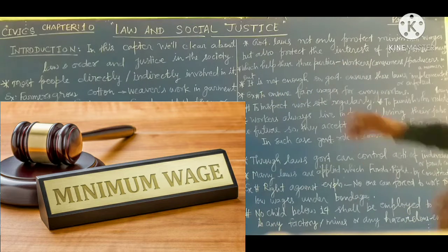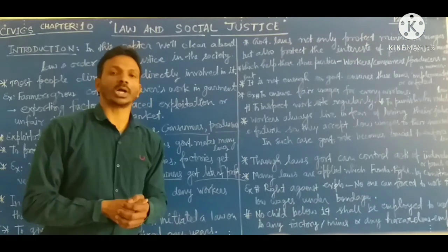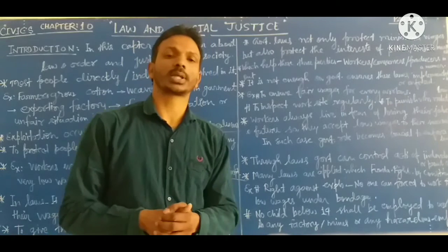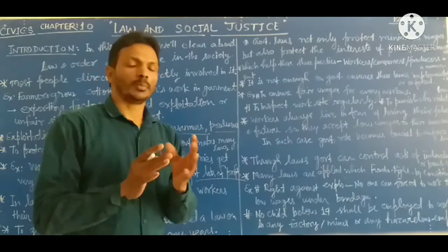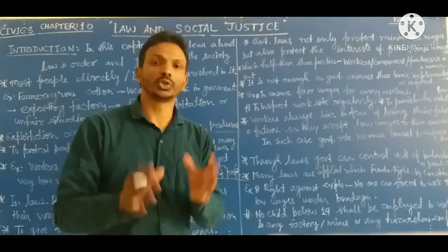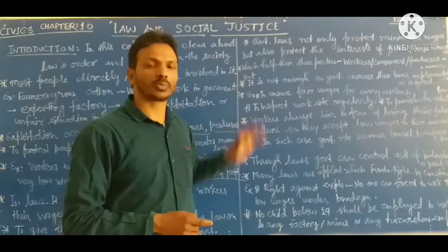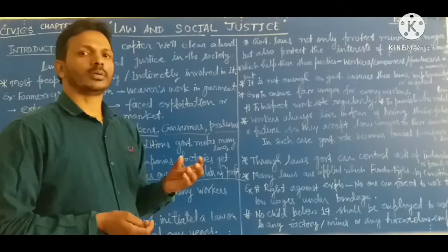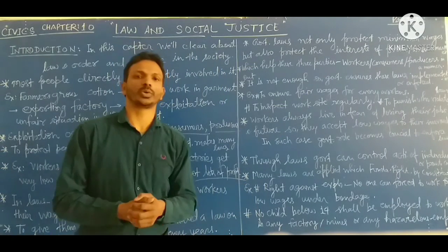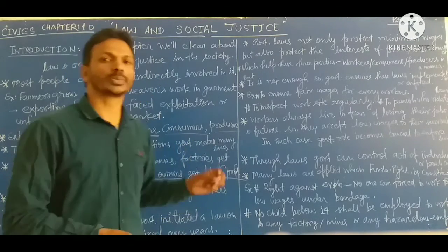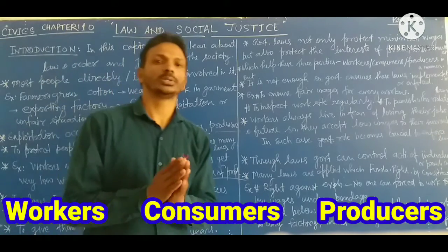Government laws not only protect the minimum wages but also protect the interest of producers and consumers in the markets. These rules cover three parties — workers, consumers and producers. And the government has made these rules for all three parties which are involved in the markets.